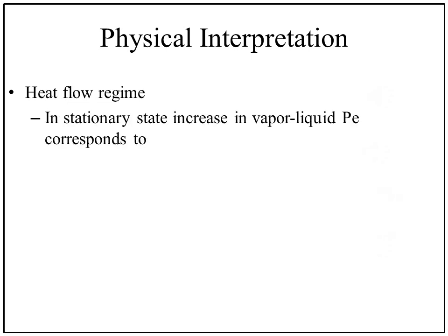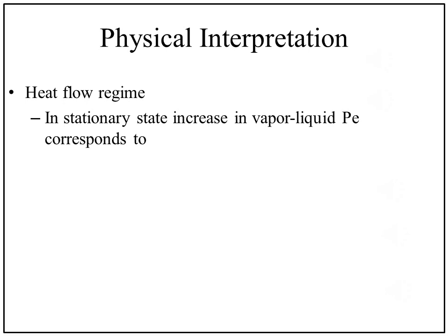In stationary flow design, when the vapor liquid Peclet number increases, two events occur. First is more heat flux at the front is needed to evaporate a larger quantity of liquid, and its influence on the temperature field and thus on the temperature slope diminishes.